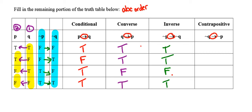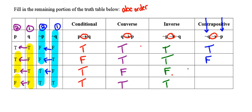For the contrapositive, not Q comes first and not P comes second, so I look at those same two columns but not Q first and not P second. False→false is fine; true→false is a problem (T doesn't come before F), so it's false; false→true is okay (F before T), so true; true→true is fine.